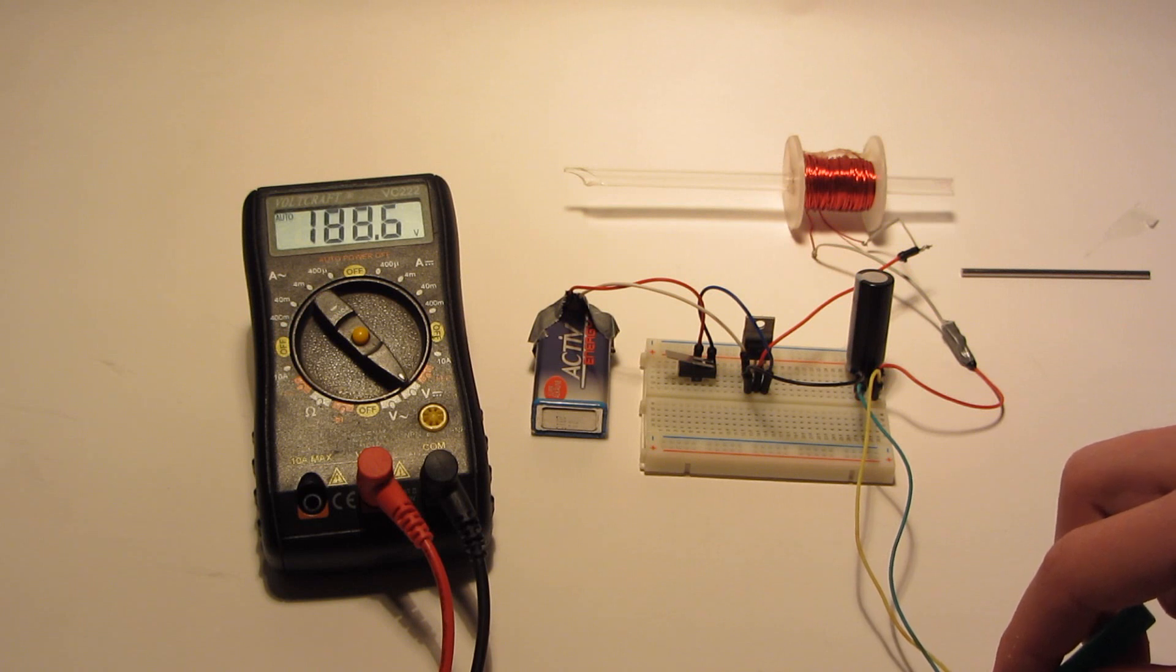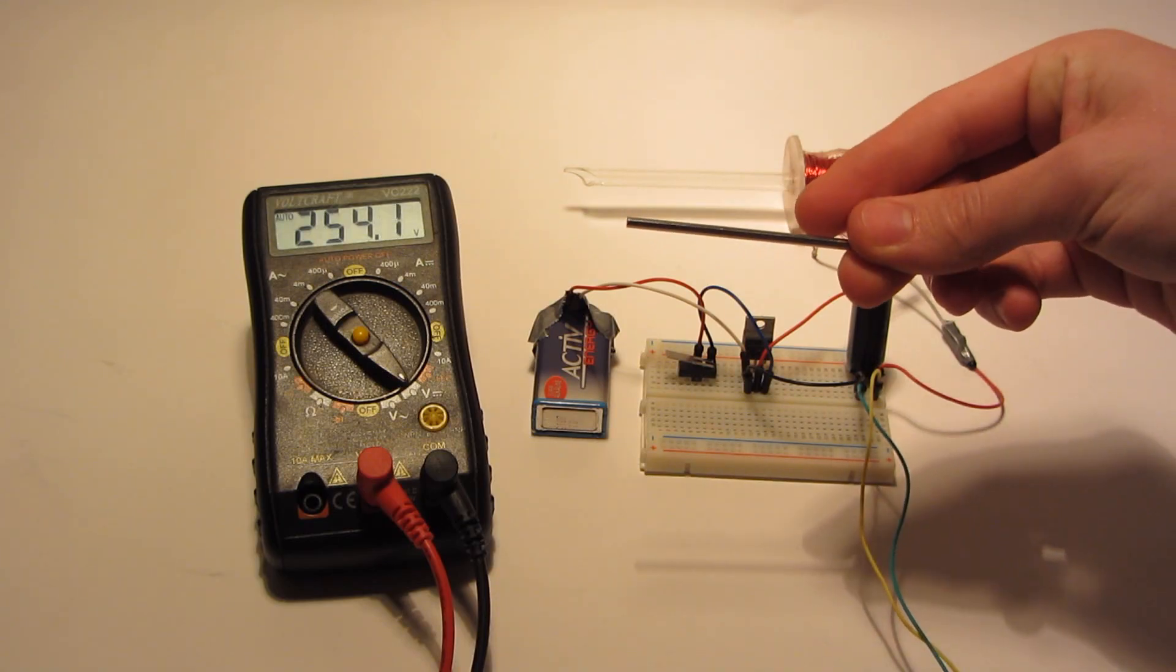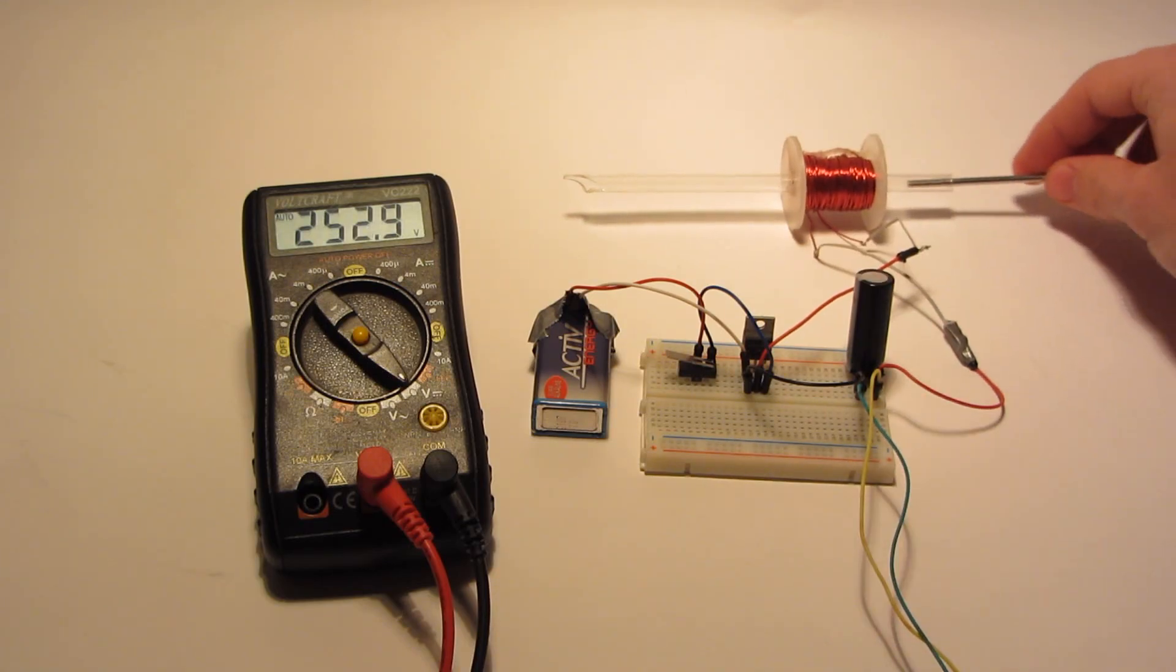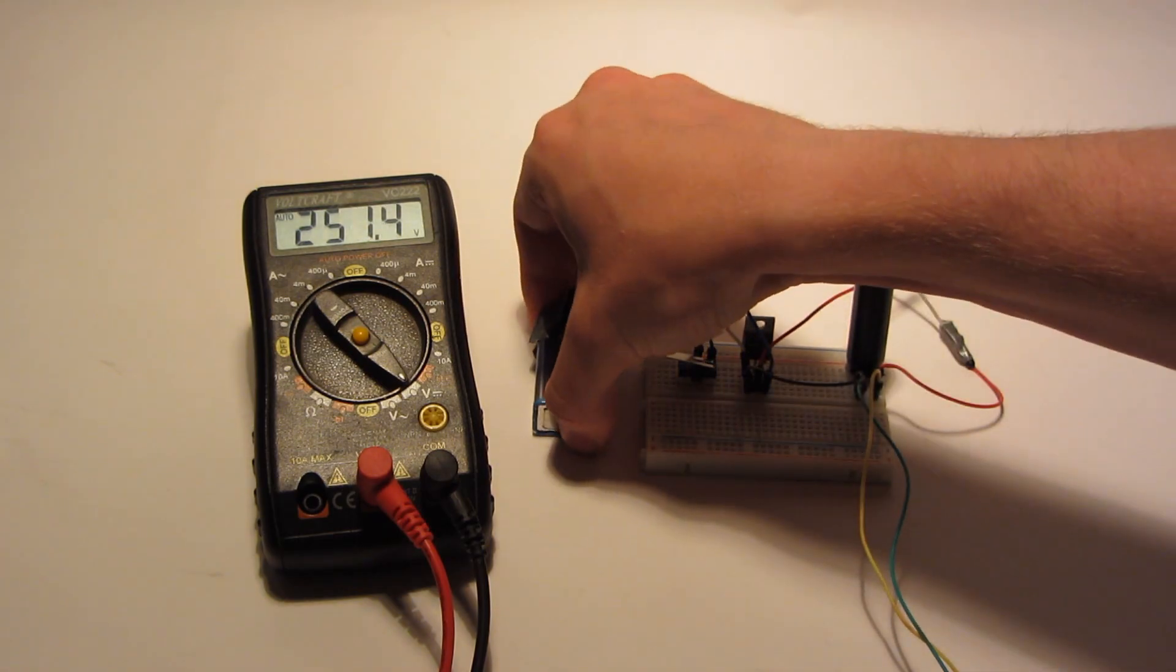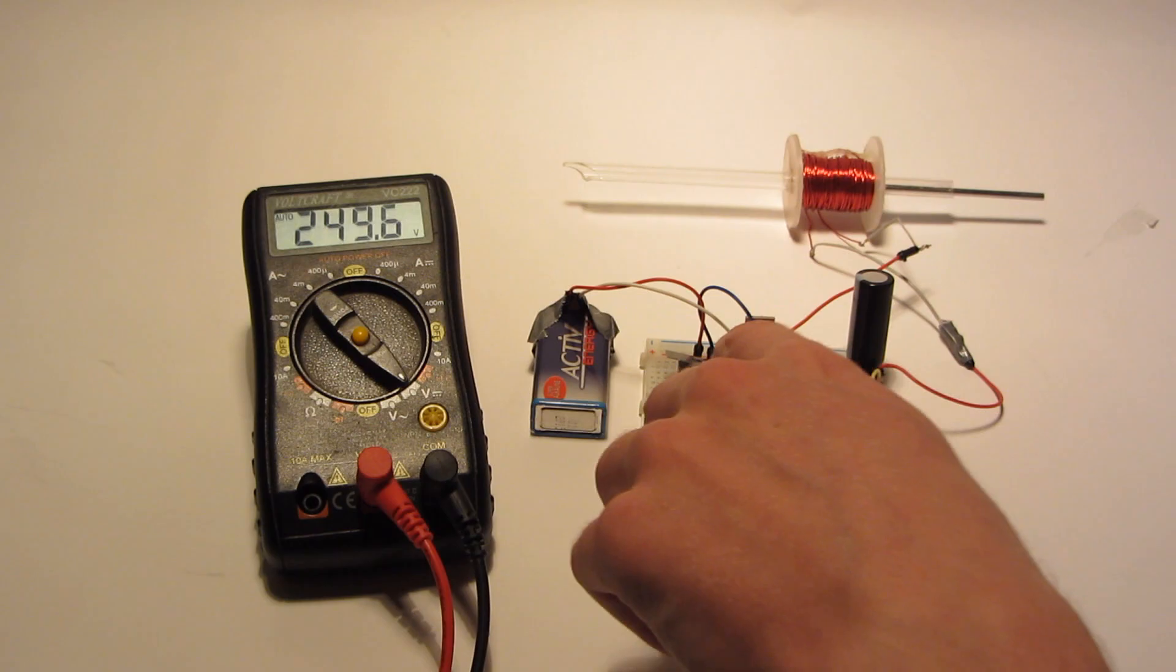You can see the voltage is rising. 260 volts, that's very dangerous already. Now let's take a piece of metal and place it in front of the coil, and now I'm gonna press this little button and we should see our result. Perfect.